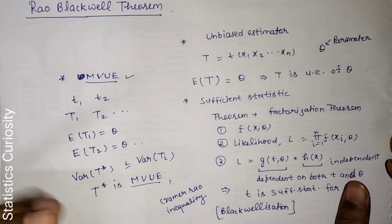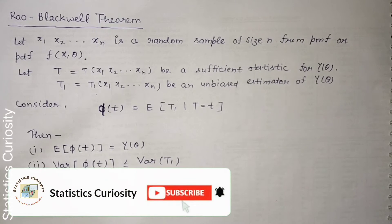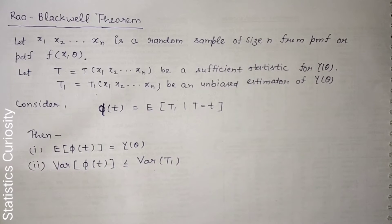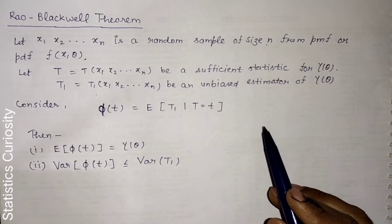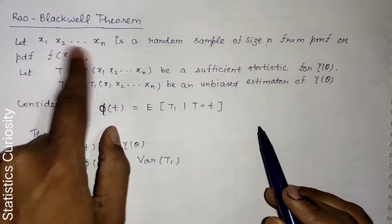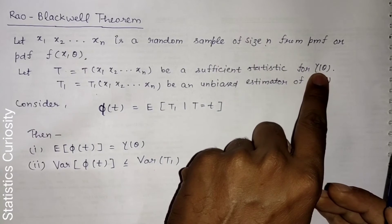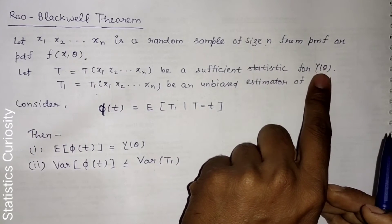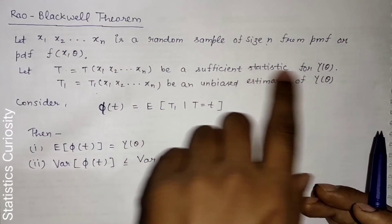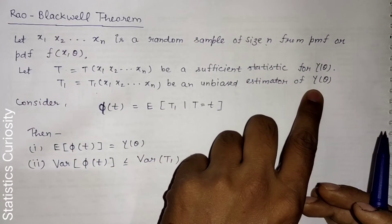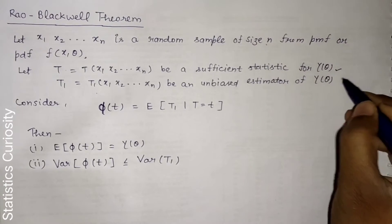Now for the statement of the Rao-Blackwell theorem: let X1, X2, ..., Xn be a random sample of size n from PMF or PDF f(x; theta). Let T and T1 both be statistics — functions of the random sample. T is a sufficient statistic for gamma(theta), where gamma(theta) is any function of the parameter theta, and T1 is an unbiased estimator of gamma(theta).